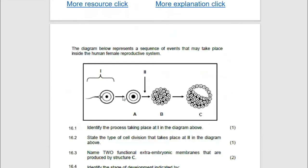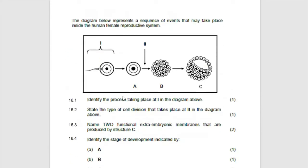So then the process I was trying to explain is here. The diagram represents a sequence of events that may take place inside the human female reproductive system. Identify the process taking place. Where's two? You see? Zygote forms a ball of cells which we call morula. So diagram one, you see a sperm fusing with the ovum, they form a zygote. So the process is fertilization.